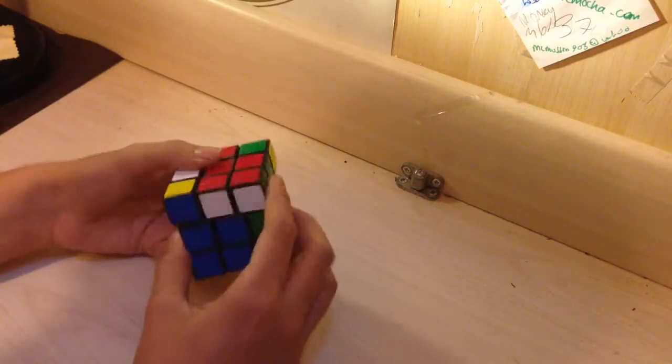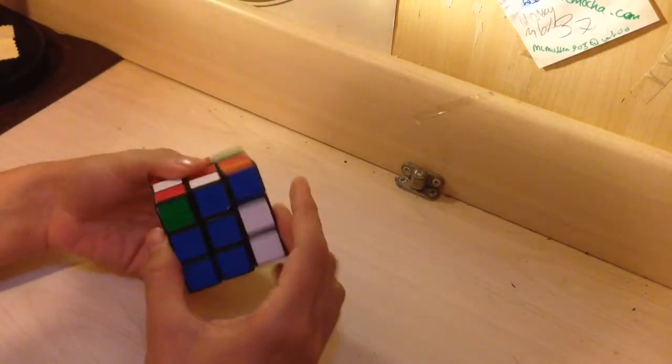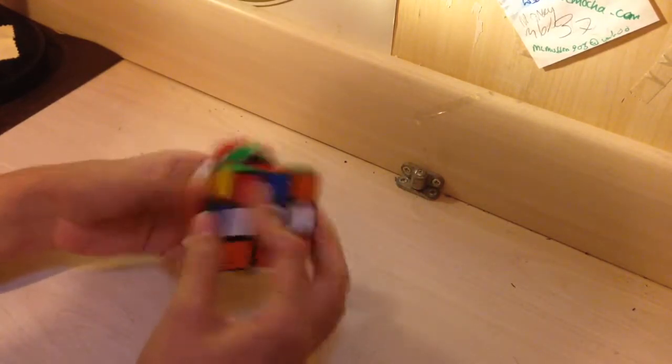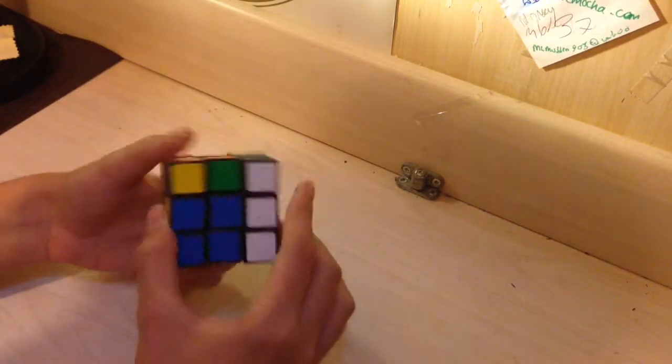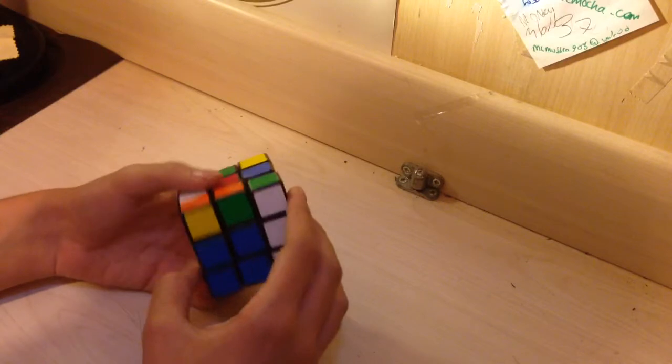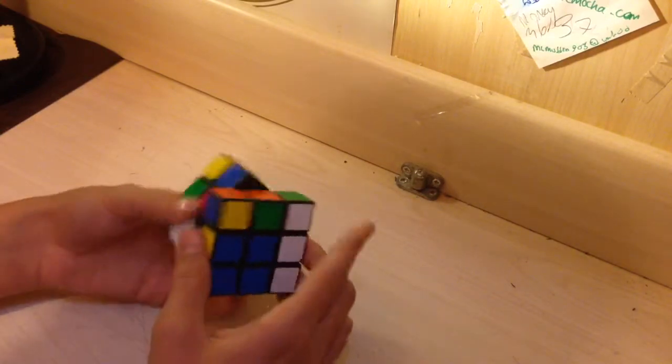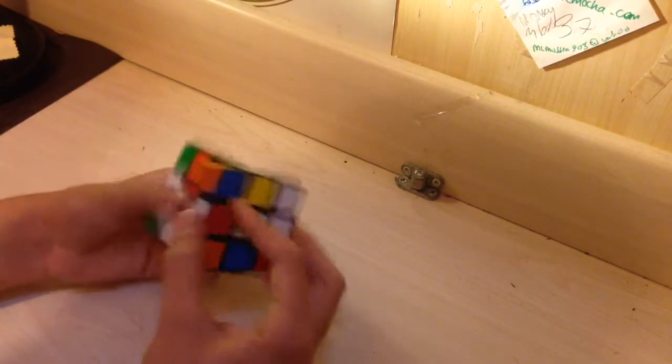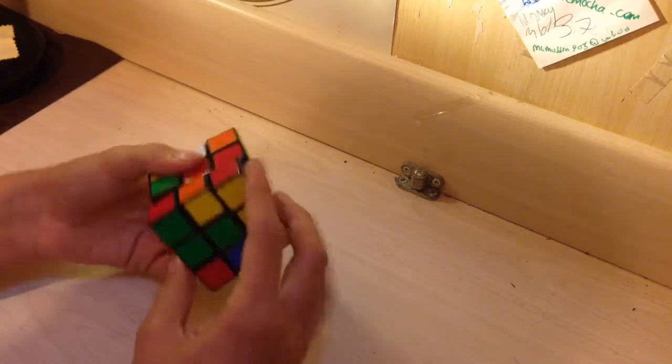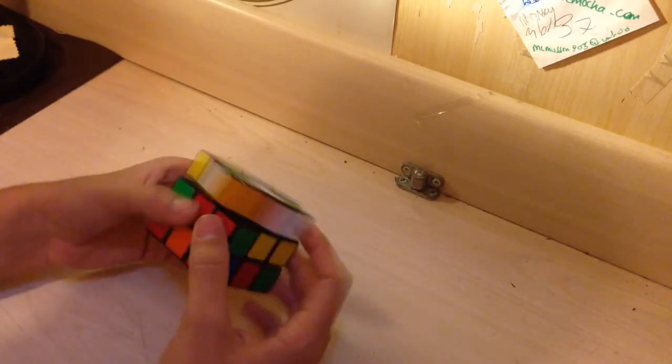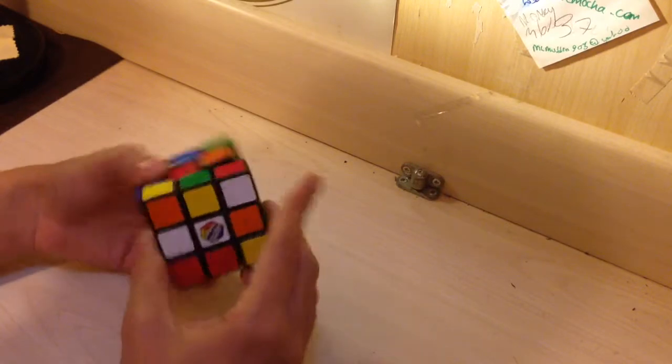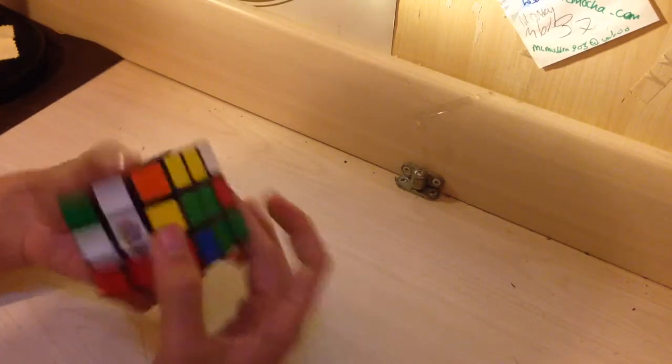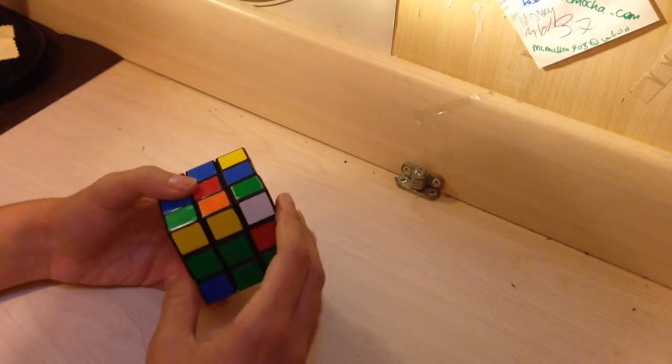Scramble. I use the beginners method right now and I have an average of 12 of 1 minute and 15 seconds. My goal is to get under 1 minute in a week. My personal best is 1 minute and 5 seconds.